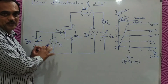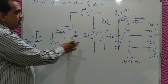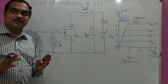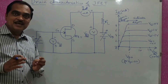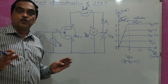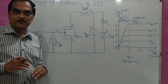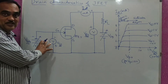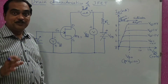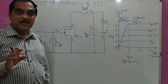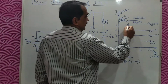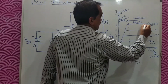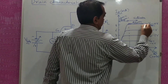Initially when VGS is 0, the output current which flows will be maximum because the depletion layer will be less and the channel width will be more. As we have seen in the construction and working, when VGS is 0, channel width is maximum, so the maximum saturation current can flow — this is the highest point on the curve when VGS equals 0.